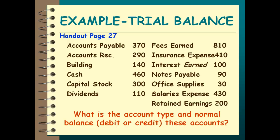Let's take a minute. Go to page 27 of your handout. By each account listed, I want you to write down two things: first, what type of account it is — asset (A), liability (L), capital (C), dividends (D), revenue (R), expense (E) — and after that, put either a D or C as to whether that is a debit balance or a credit balance. Let's do the first one together. Accounts payable is a liability, and the normal balance in a liability is a credit. We need to know the account types first before we can put them in the right place in the trial balance.